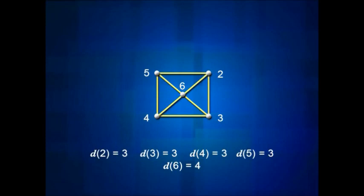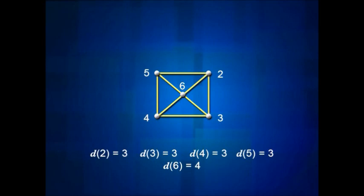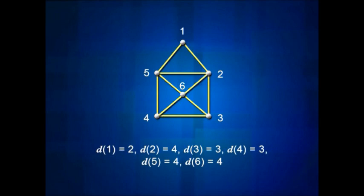Consequently, if a graph has any hope of being drawable then it has to have at most two vertices of odd degree. In our picture the degree of 2 is 3, degree of 3 is 3, degree of 4 is 3, degree of 5 is 3, and degree of 6 is 4. We have four vertices of odd degree, but to be drawable you must have at most two, so this graph is not drawable.